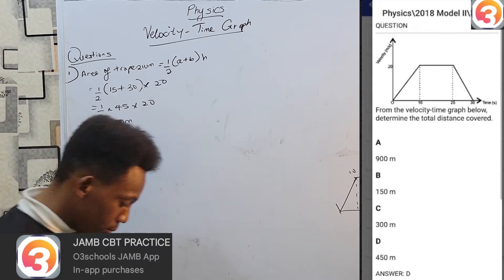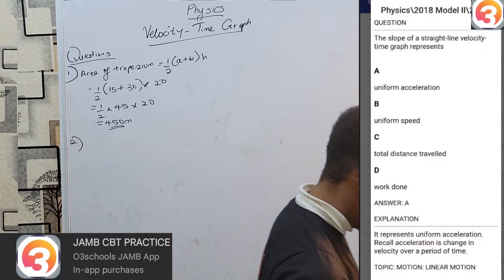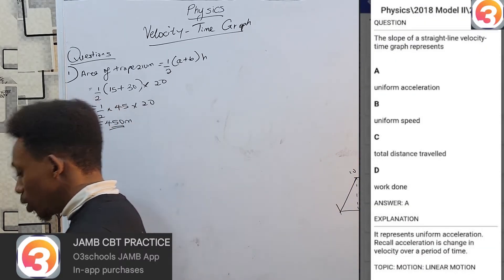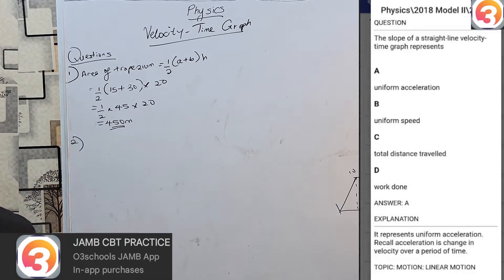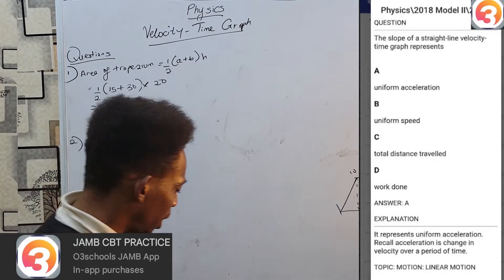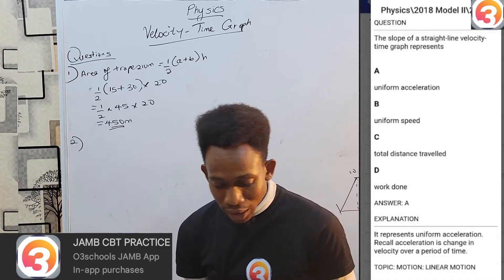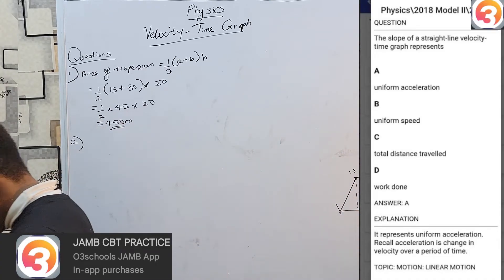Question 2. The slope of a straight line velocity time graph represents, we said this already, it represents acceleration. So, that's option A. Very, very easy. That was from 2018, model 2, question 28.